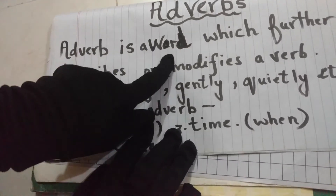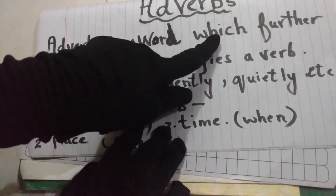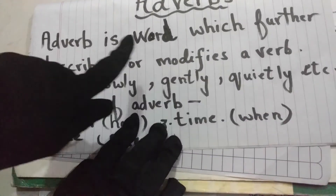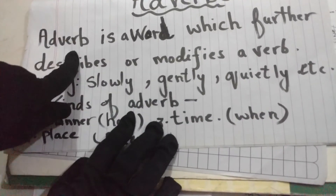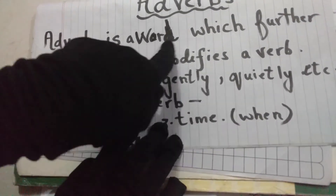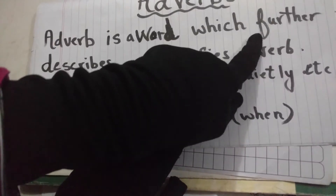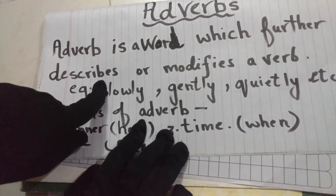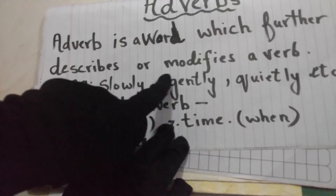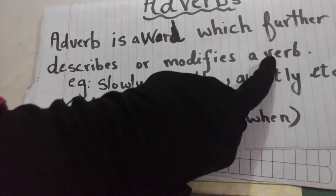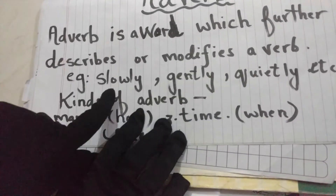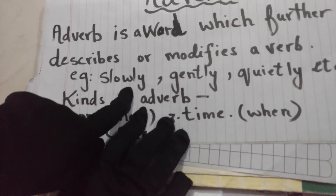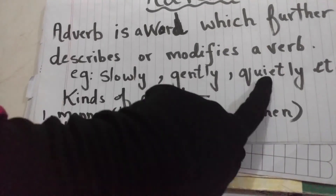An adverb is a word which further describes or modifies a verb. It further describes and makes the meaning clearer. For example, adverb words include: slowly, gently, quietly, and so on.